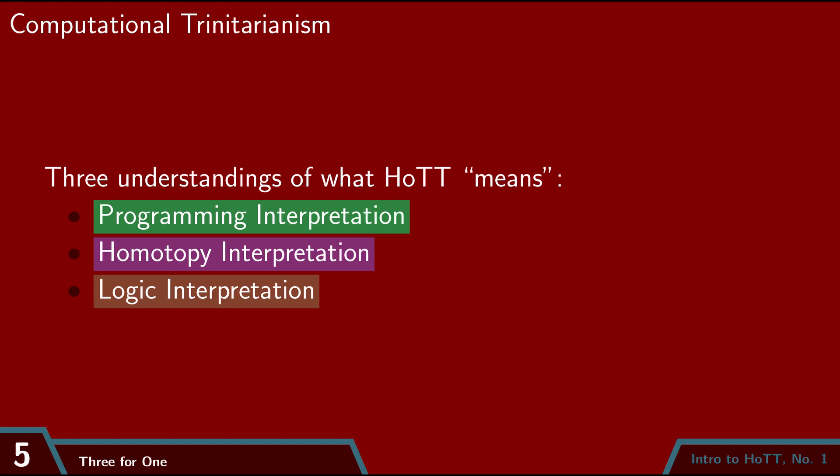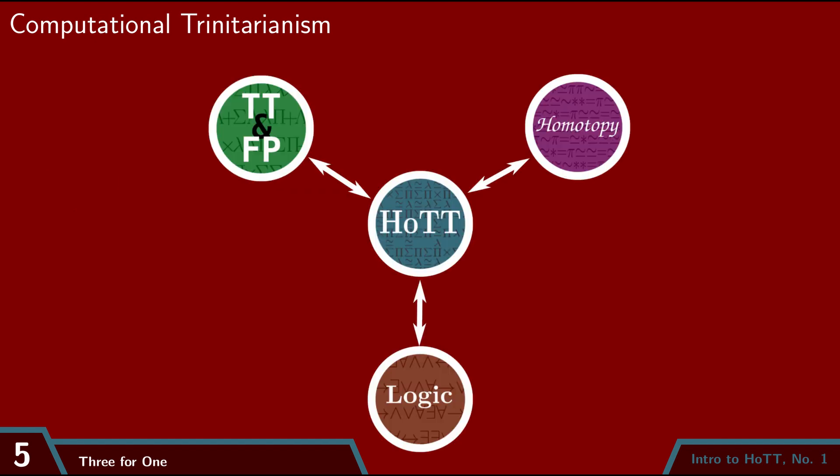This is the heart of why HoTT is useful. We can move back and forth between these interpretations as needed. If we need to encode a proof, then HoTT is a system of logic. If we need to study the structure of a higher dimensional space, then HoTT provides vocabulary for characterizing such spaces. If we need to translate all that into something computer checkable, then we're in luck, because HoTT is a programming language. Everything we do or say in HoTT will have three meanings, and looking at a concept from three different perspectives will frequently prove incredibly illuminating.